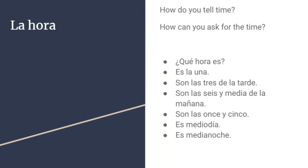To subtract minutes from the next hour, use menos: son las siete menos diez — that's 6:50, or ten to seven. For noon, you say es mediodía, and for midnight, es medianoche — these use es because they're singular. Notice that mediodía is masculine and medianoche is feminine.